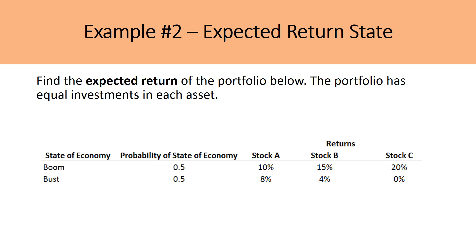In example two, let's find the expected return of a portfolio that is equally invested across three assets — one-third each in stocks A, B, and C. There are two different states in the economy, each with a 50% likelihood. In the boom period, stock A increases by 10%, stock B by 15%, and stock C by 20%. In the bust period, stock A increases by 8%, stock B by 4%, and stock C by 0%. To account for different states of the economy, we must multiply the probability of each state by its expected return in that state.